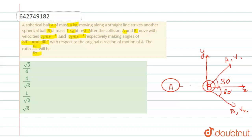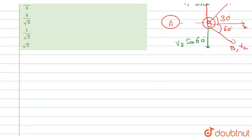Now we resolve the components. This component is V1 sin 30 degrees, and this component is V2 sin 60 degrees. Now we apply conservation of momentum.